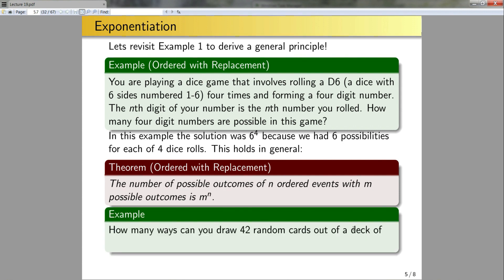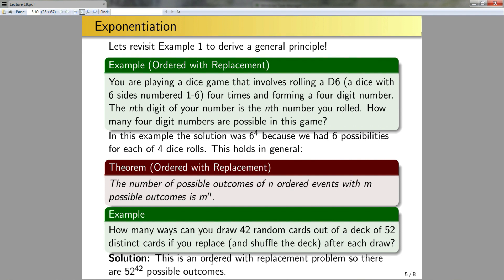Let's see an example here. How many ways can I draw 42 random cards out of a deck of 52 distinct cards if I replace and shuffle the deck after each draw? I want to know how many possible ways can I pull out these cards, and I care about the order. Further, the cards are replaced and the deck is shuffled so that each time I'm actually pulling a true random card out of the deck.